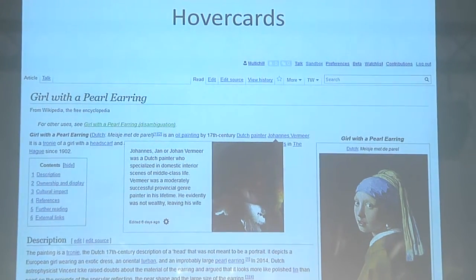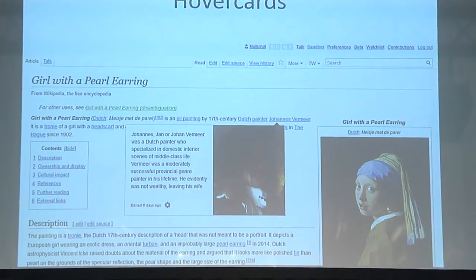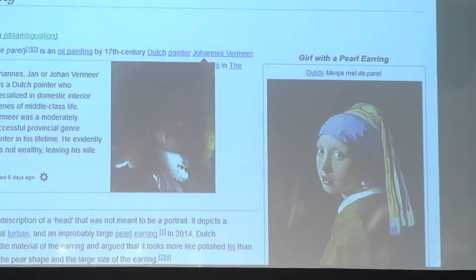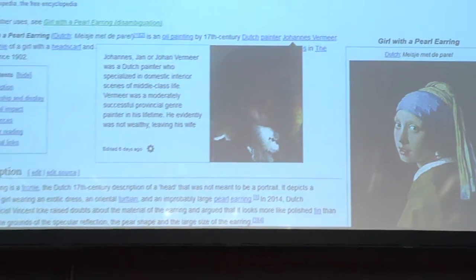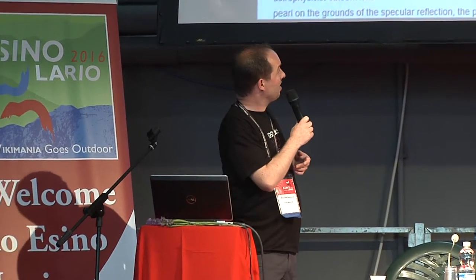Hover cards is something to make it easier to wander around Wikipedia. It's a beta feature right now — if you enable it and hover over a blue link, you will see more information: the introduction of the article, an image, and when it was last edited. You can just move around and, without having to click, see what an article is about. It will work on most wikis by now — even on Wikidata, you can use it to go over items to get more information.